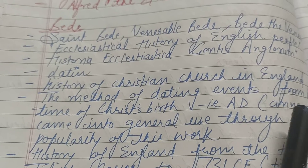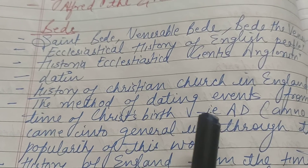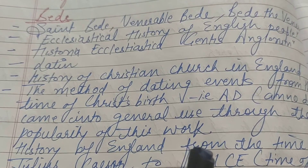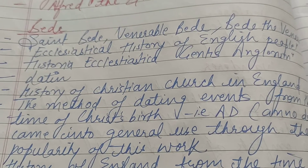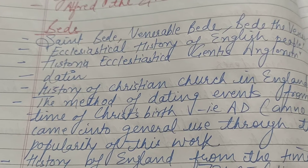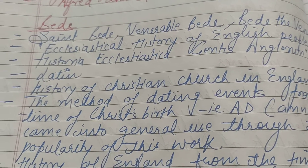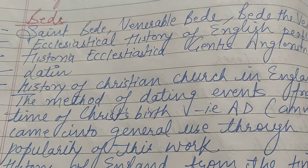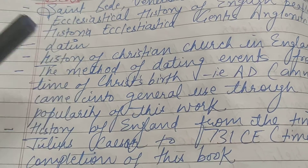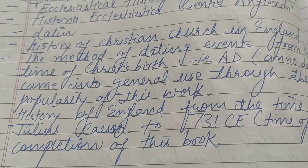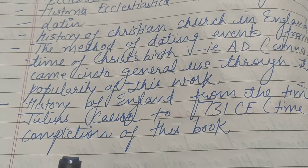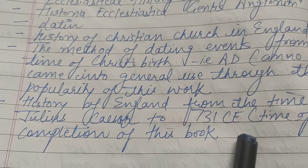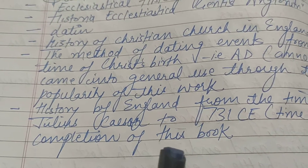The method of dating events from the time of Christ's birth — that is AD, Anno Domini — came into general use through the popularity of this work. Isi work ki popularity ke baad dating ka method, Christ ke baad jo 1 AD, 2 AD, 3 AD ka jo method hai, wo popular hua. Ismein History of England bataya rakha hai from the time of Julius Caesar to 731 CE, jab is book ki completion hui thi.